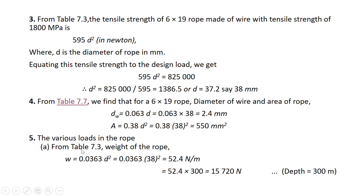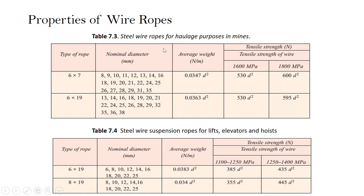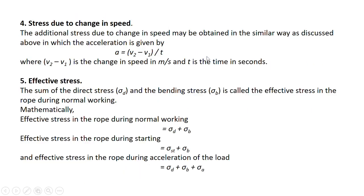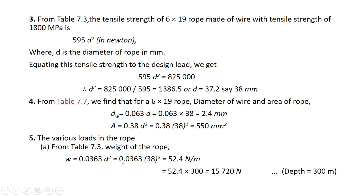The weight of the rope will be calculated using the expression given in table 7.3. The rope diameter is 38 mm, so putting this value in the expression the weight per meter length of wire rope is 52.4 Newton per meter. Since the load is to be lifted from a depth of 300 meters, the active rope length is 300 meters. Multiplying by 300, the weight of the rope comes out to be 15,720 Newton.